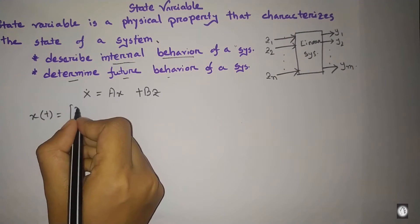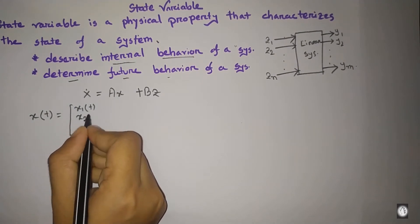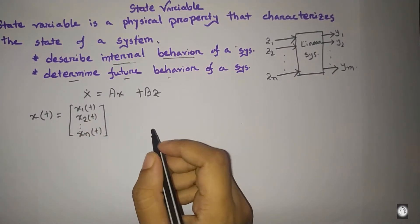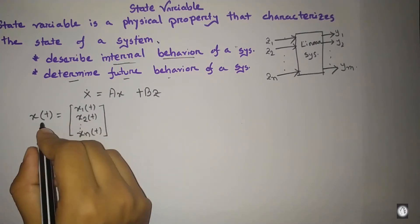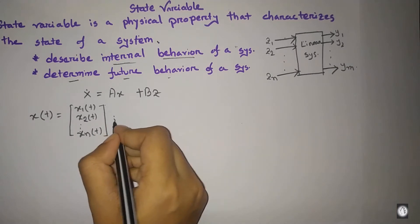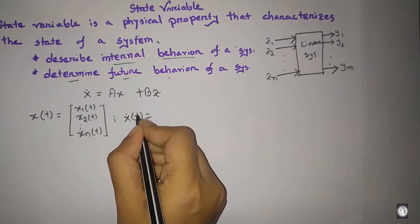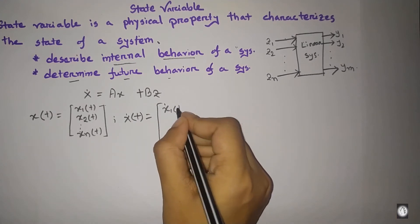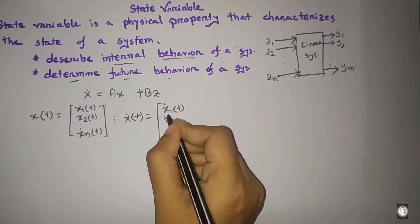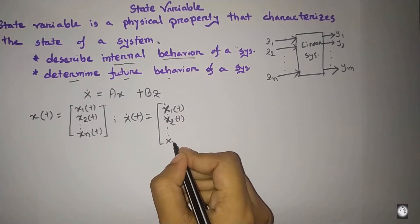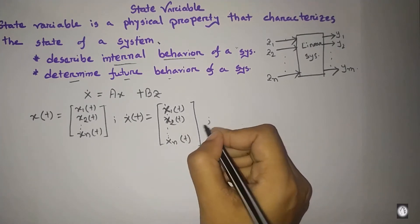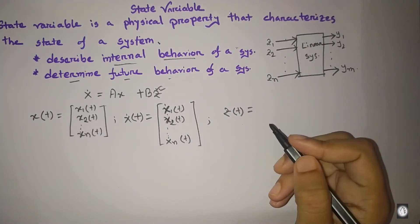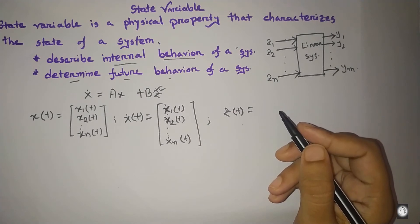x(t) can be written as a matrix containing x1(t), x2(t), up to xn state variables. x_dot represents the first derivative, so x_dot(t) is written as x1_dot(t), x2_dot(t), and so on, where each represents the derivative of a state variable.